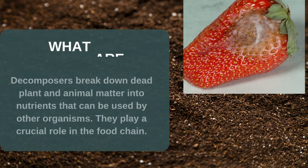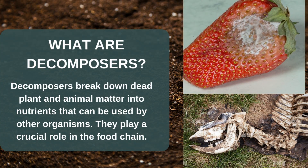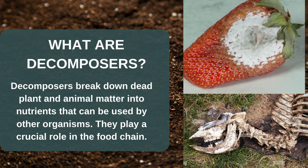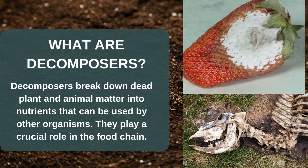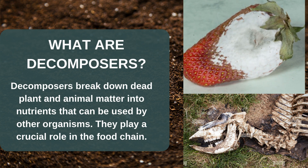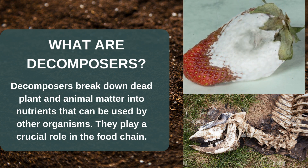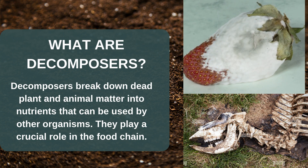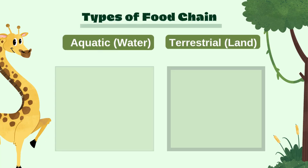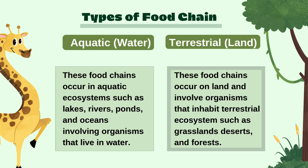What are decomposers? Decomposers break down dead plant and animal matter into nutrients that can be used by other organisms. They play a crucial role in the food chain. An organism — often a bacterium, fungus, or invertebrate — feeds on and breaks down dead plant or animal matter, making organic nutrients available to the ecosystem.